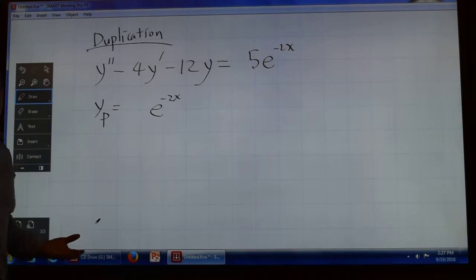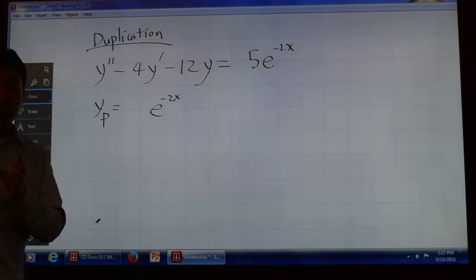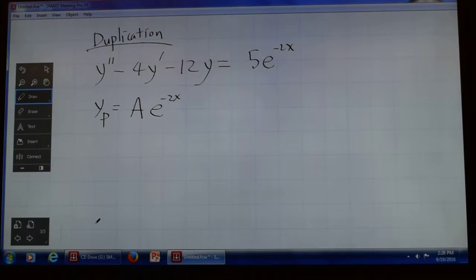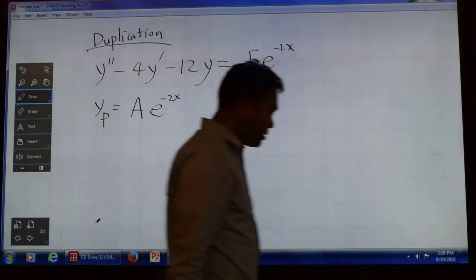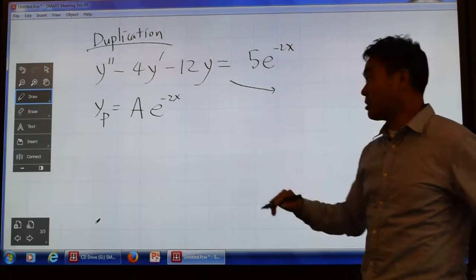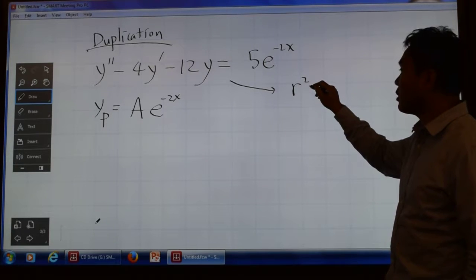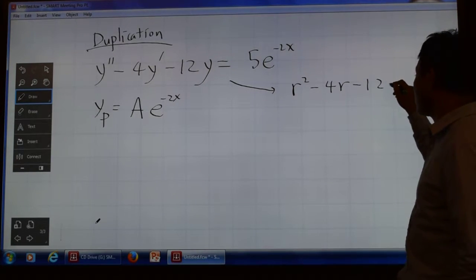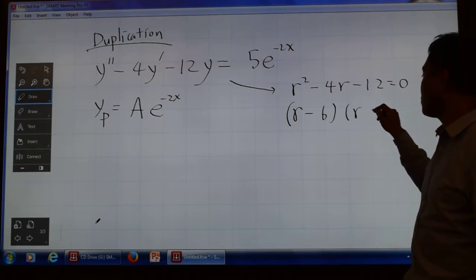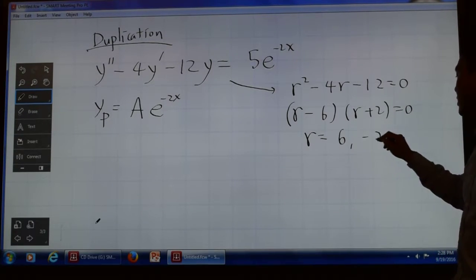And then once you've picked your functions, what do you do? You make the coefficients undetermined, right? You need to put this undetermined coefficient, that's why it's called the method of undetermined coefficients. But then I told you to also find yc before you proceed to calculate this. Now let's see why. Now for this one, the characteristic equation is r squared minus 4r minus 12 equal to 0.